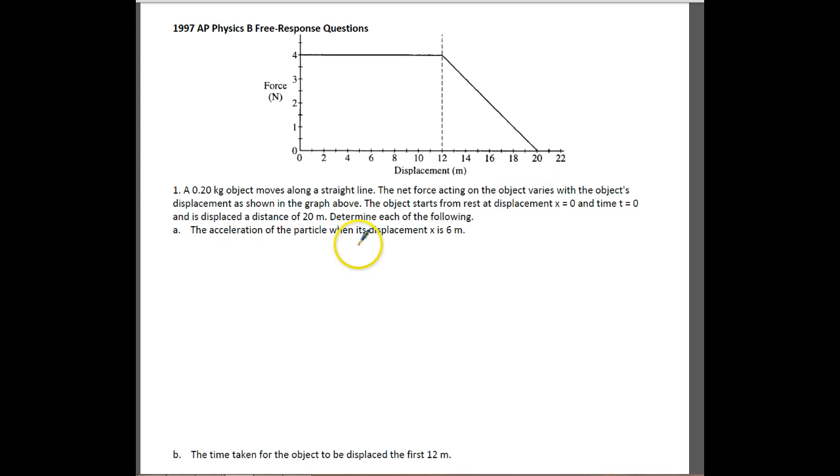They want to know the acceleration of the particle when its displacement is 6 meters. So there's 6 meters, notice that there is 4 newtons of force on there. We know that the force is equal to mass times acceleration. If we solve this for acceleration, that'd just be force over mass.